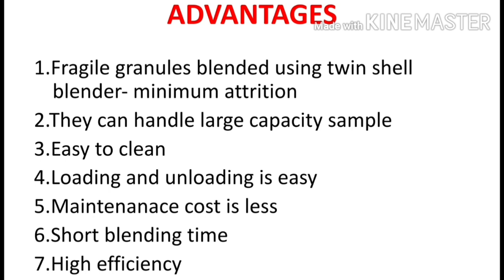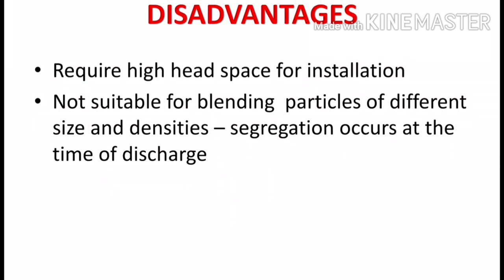Now the advantages of the V-cone blender or twin shell blender: using this blender we can mix fragile granules. Since we are not using any kind of baffles or blades, attrition will be minimum, which is why fragile granules can be handled. We can also handle large capacity of samples, and this equipment is very easy to clean.